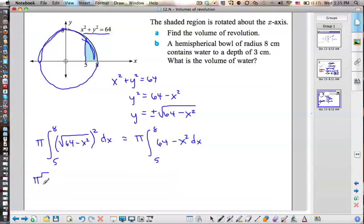Keep the pi up front. Pi. 64x minus one-third x cubed. Okay. You got a funny looking 64x. 64. Ah, good, good. 64. From? Five to eight. Five to eight.